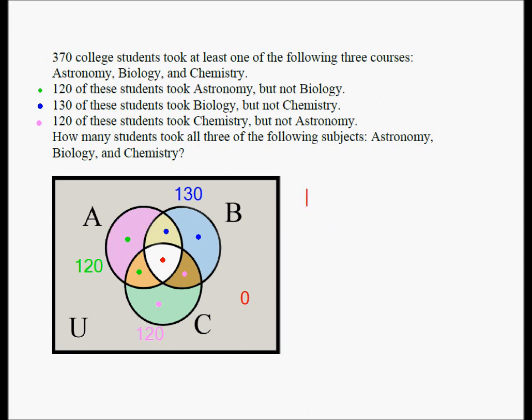What we need to do is from 370, we need to subtract the green 120 plus the blue 130 plus the pink 120. Those are the other numbers that we need to subtract from 370. 370 is the sum of all the seven numbers within the three circles. And from that, if we subtract the sum of the six numbers, we will get our answer.